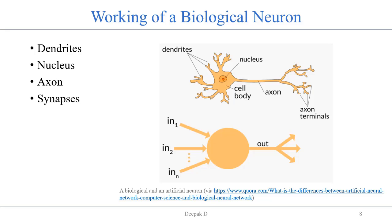You can see there are some major parts of neurons. The first one is the cell body, also called soma. The body of the neuron cell contains the nucleus and carries out the biochemical transformations which are necessary to the life of the neurons.